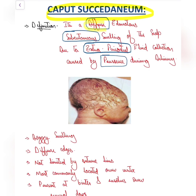It is a diffuse edematous swelling occurring in the subcutaneous plane of the scalp. Because it is in the subcutaneous plane, it has to be extra-periosteal. It happens because of fluid collection caused by pressure during delivery.